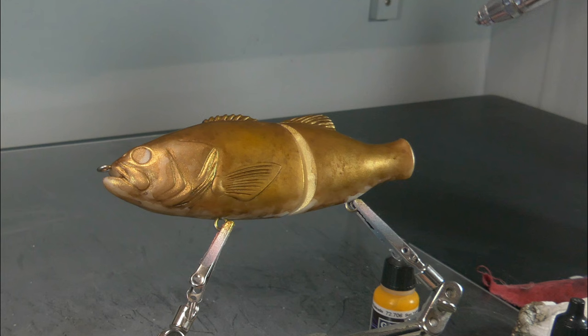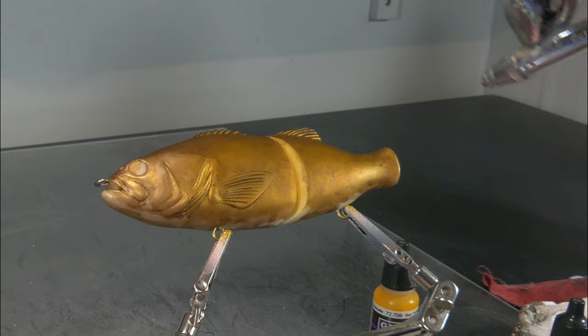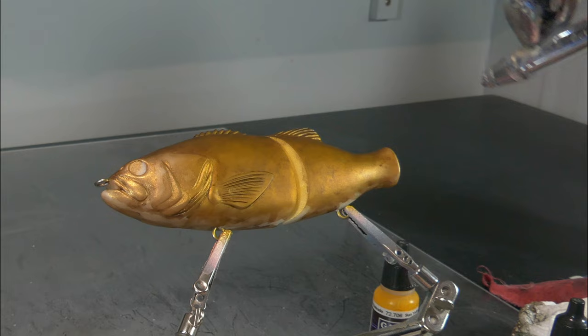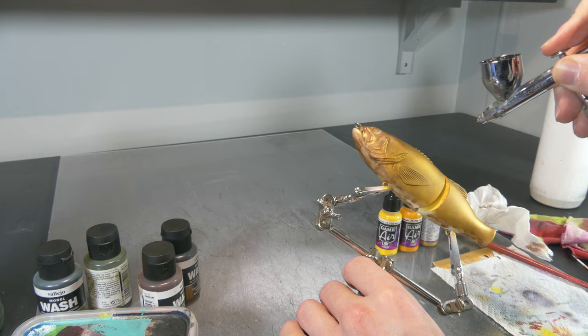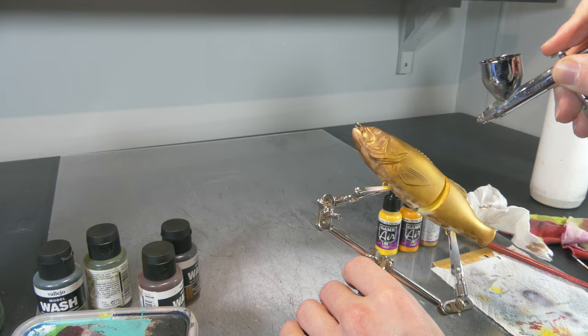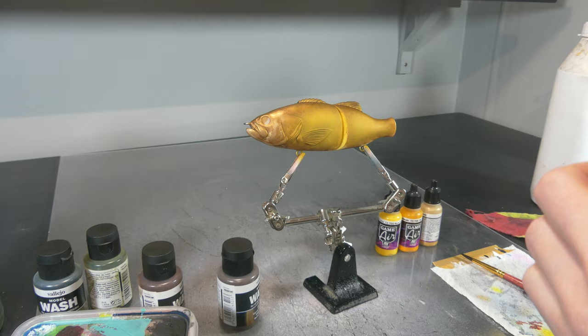Again, I want the flanks to be a little bit brighter, so there I am using a Vallejo game air sun yellow which is semi-opaque. And if you spray it very lightly that gold pearl is still going to shine through but everything is going to be a little lighter, a little bit more yellowish.